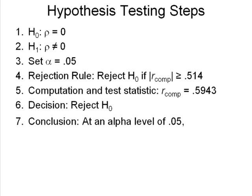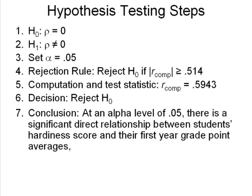At an alpha level of .05, we have to say what we found. And what we found was that there is a significant direct relationship — direct because our R score is positive. So at an alpha level of .05, there is a significant direct relationship between students' hardiness scores and their first-year grade point averages.